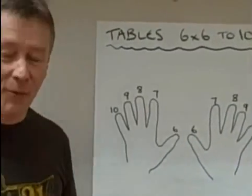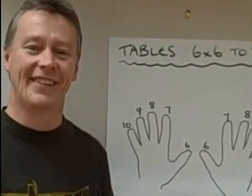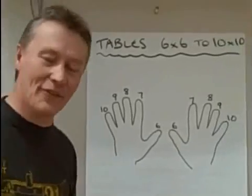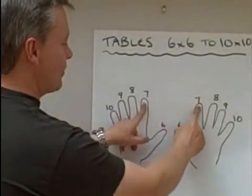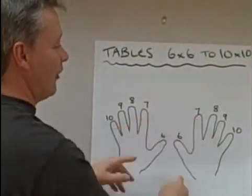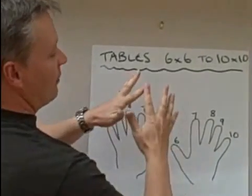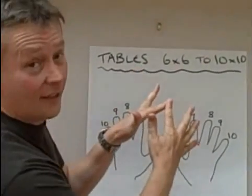So ask me a question. 7 times 7. Okay, 7 times 7. So what I do is I touch those two fingers together. I tip them together like that.